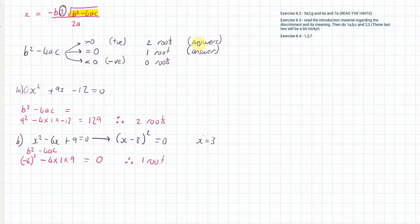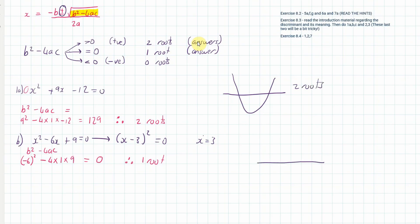Essentially, if you've got two roots your equation will look like a parabola passing through the x-axis at two points. If you've got one root it just touches the x-axis at one point. Let's check the third case — no roots — with x² + 8x + 20 = 0.